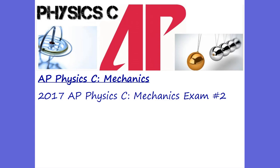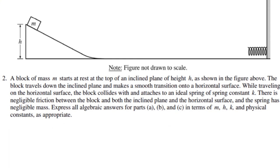Hey, this is Mr. Aden. We're back, and this is the AP Physics C Calculus Mechanics, and it's the 2017 exam number two. Let's take a look at what this problem looks like. We have a box mass M at the top of a height H inclined plane. It's smooth — there's no friction. It's going to come down and hit a spring. We have potential to kinetic, then potential kinetic to potential of the spring. We're going to express all our answers in our variables: M, H, K, physical constants, and all those different things.